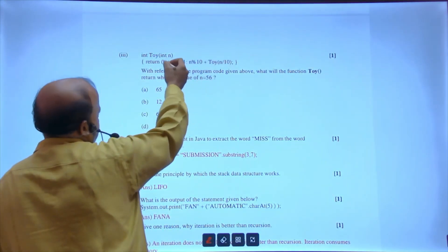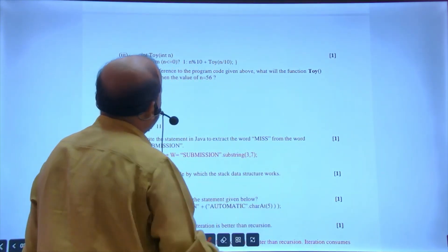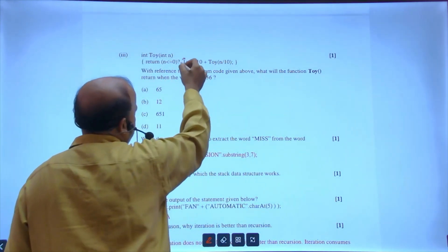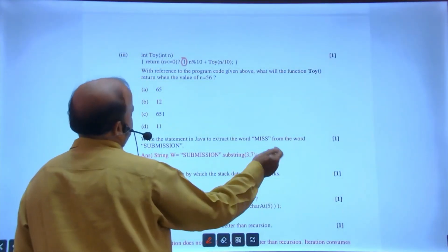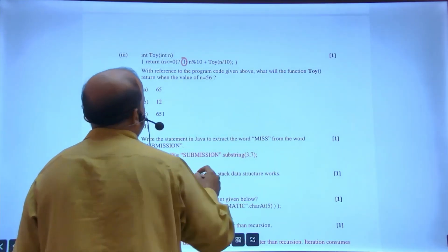Now if your n is less than 0 it will terminate, giving 1. Otherwise, when it's not terminated, suppose when you're passing 56, so what you're getting?